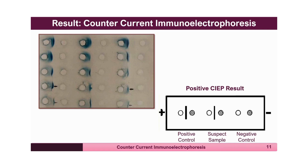Using counter current immunoelectrophoresis, one can get results of the antigen-antibody reaction very fast — within one hour, one can determine whether a particular suspected antigen is present. Whereas in earlier experiments such as the Ouchterlony technique or single radial immunodiffusion, you have to wait overnight to get results. In contrast, if an electrophoresis apparatus is available, the reaction between soluble antigen and antibody can be demonstrated very quickly by precipitin reaction, with results available within one hour.